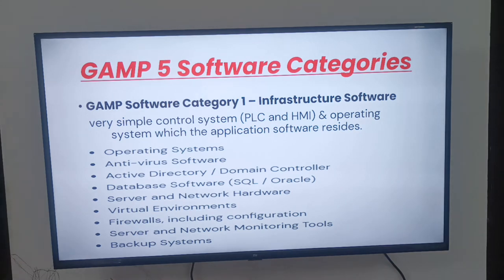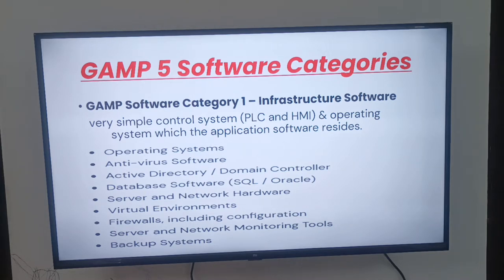Category 1 is infrastructure software — the name says it all. Examples include: operating system, antivirus system, active directory, domain control, database software like SQL and Oracle, server and network hardware, virtual environments, firewall including configuration, server network monitoring tools, and backup systems. These are all examples of infrastructure software.